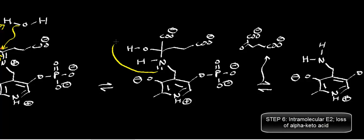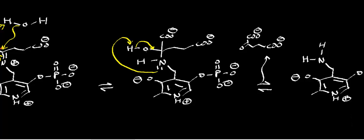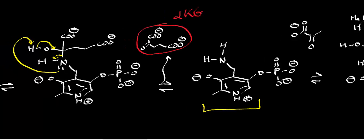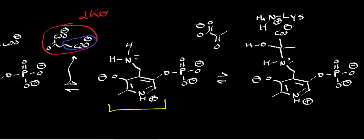The amine then deprotonates the hydroxyl group, forcing formation of a carbonyl — specifically the alpha-keto group — and the nitrogen leaves as the leaving group. This generates the amine version of pyridoxal phosphate and releases alpha-ketoglutarate. If this were running in the direction of alanine catabolism, we would have started with alanine and the R group would have been a methyl group, spitting off pyruvate instead.